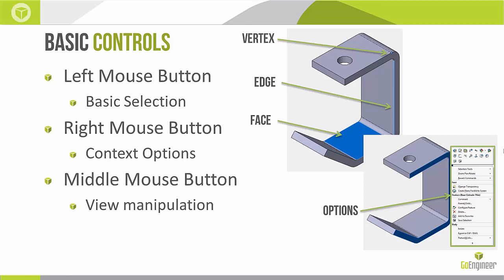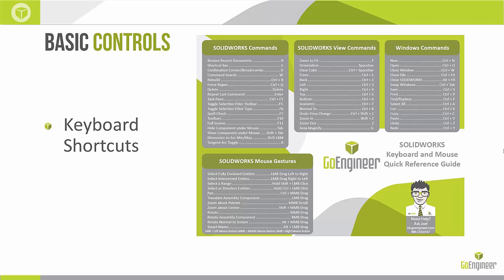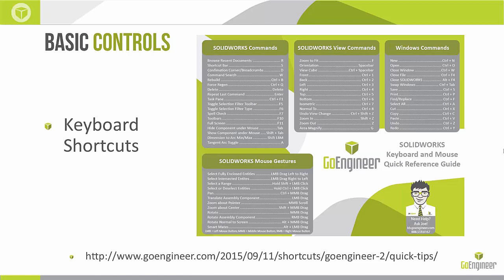Lastly, we have the middle mouse button, which is used for view manipulation. You can roll the middle mouse button in and out, depress it and move your cursor around — a lot of functionality comes from it. Here's a handy guide for basic shortcuts. I'd recommend screenshotting the video or downloading the PDF at the link listed below. Many of the mouse gestures involve the middle mouse button combined with alt, shift, or control keys to move your view around.